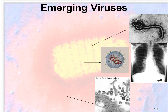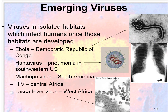There are also emerging viruses. There are viruses in isolated habitats, well out of normally humans' range, but now we've come upon them as we've been exploring our Earth more and more. Some of these can infect humans once habitats are developed or explored. For example, the Ebola virus was discovered in the Democratic Republic of Congo. Hantavirus caused severe pneumonia and in some cases death in the southwestern U.S. Machupo virus in South America. HIV in Central Africa. And the Lassa fever virus in western Africa.